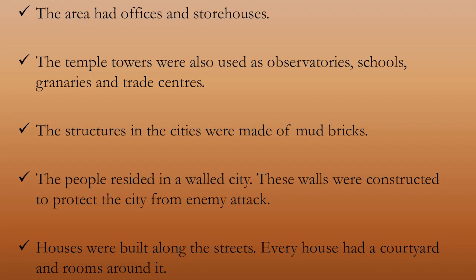The ziggurat had offices and steward houses, observatories, schools, granaries, and trade centers. The buildings in the cities were made of mud bricks. The people resided in the walled city, and these walls were constructed to protect the city from enemy attacks. Houses were built along the streets, and every house had a courtyard with rooms around it.